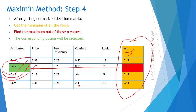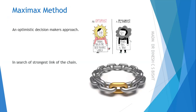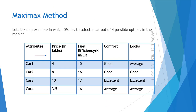Now focus on this minimum column and select the maximum out of these minimum values. The maximum of 0.13, 0.16, 0.13, and 0.11 is 0.16. The corresponding option is then selected — the decision maker selects car 2. This is how the Maximin method works. Now we move to the Maximax method, which is just the reverse of the Maximin method. The Maximax method uses an optimistic decision maker's approach — an optimist always thinks of benefit and focuses on the strongest link of the chain.